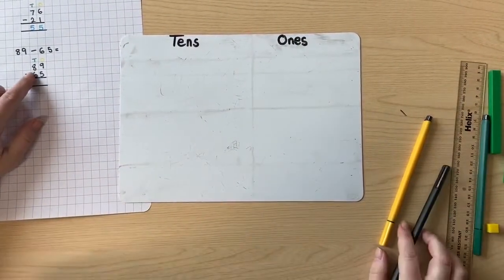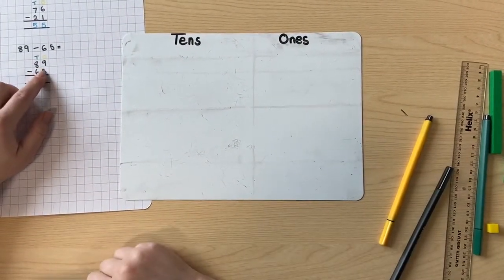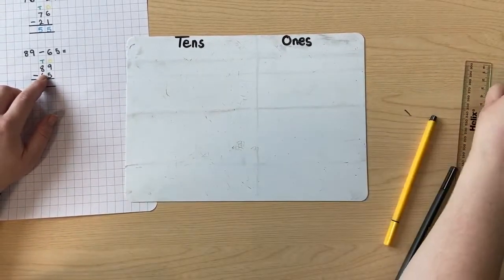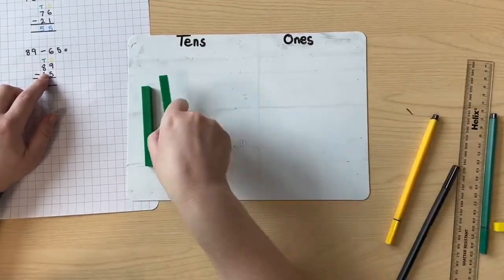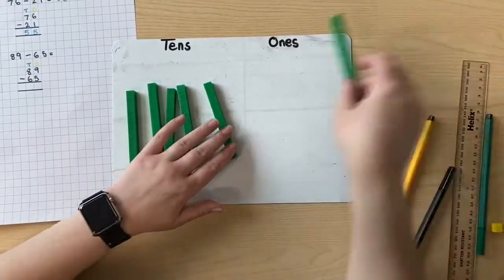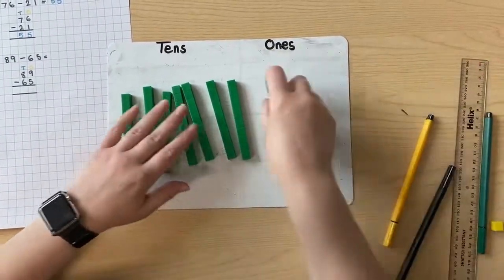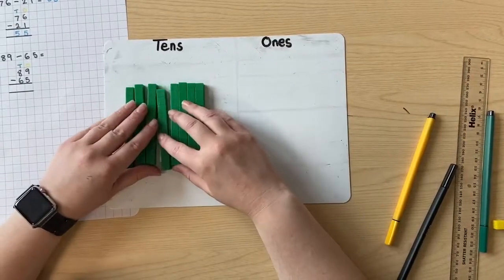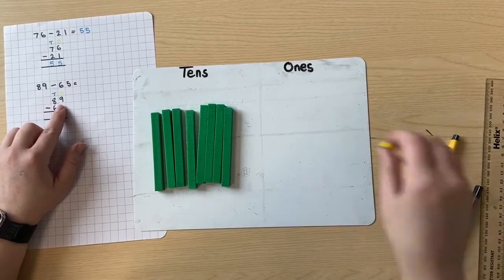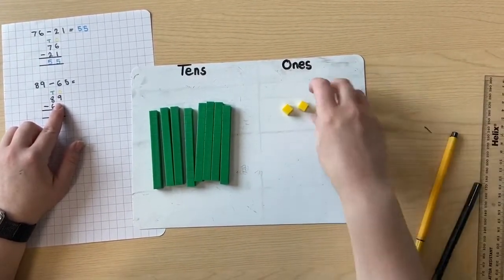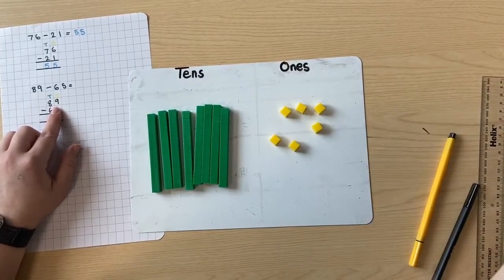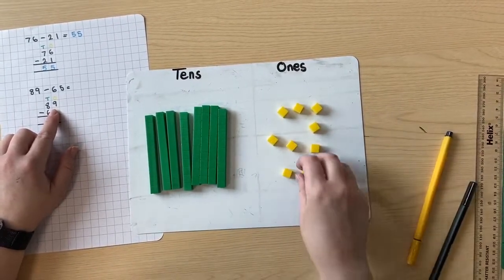Let's have a look at this first number, 89. How many tens are in 89? There are 8 — I've got 8 tens here. How many ones are there? There are 9.